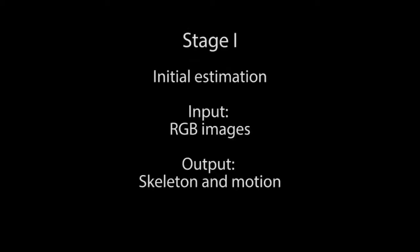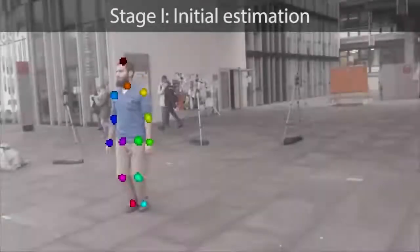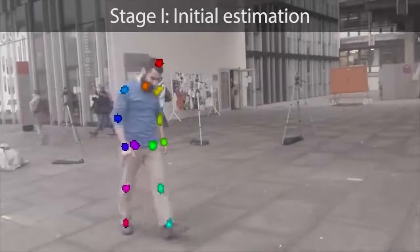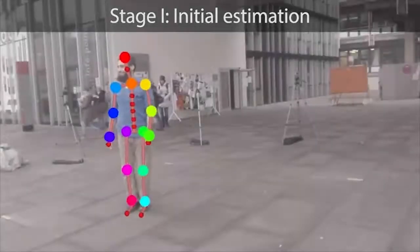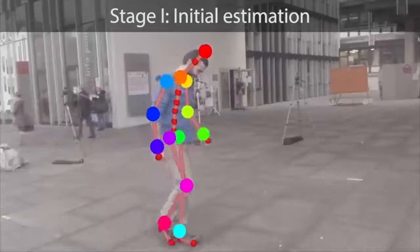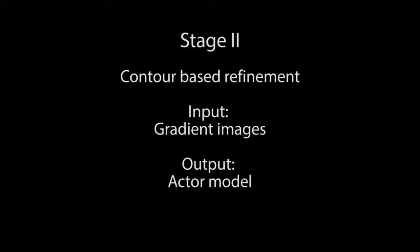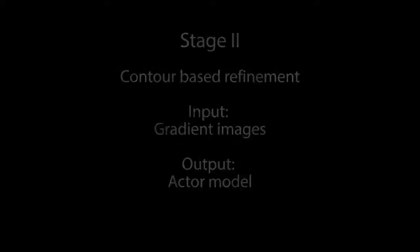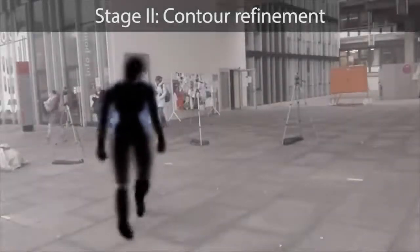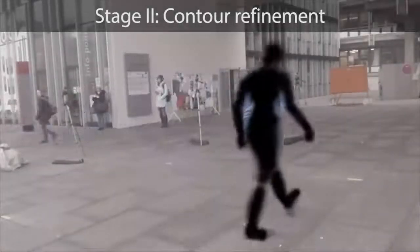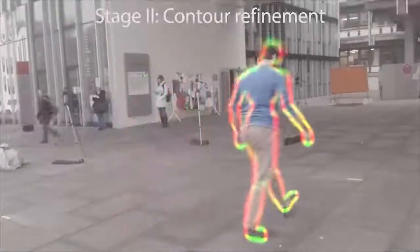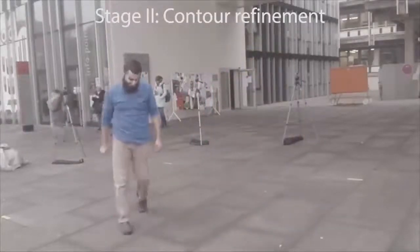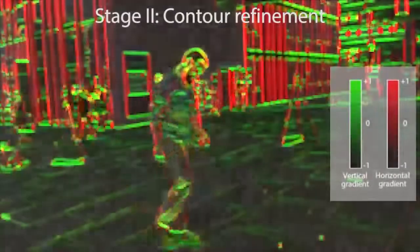Our algorithm proceeds in two stages. Given multi-view video, a discriminative detector estimates 2D joint positions. We then infer an initial estimate of the shape and pose of the subject by fitting a 3D skeleton. In the second stage, we represent the actor by a smooth volumetric density. We compute the volumetric contours of this density using a ray-casting image formation model. These contours are directly fitted against image gradients, which avoids error-prone segmentation.